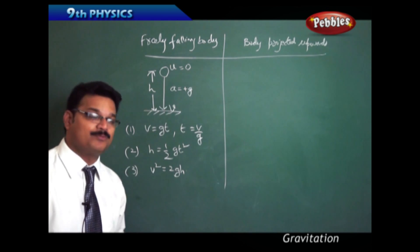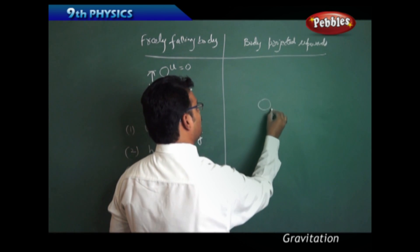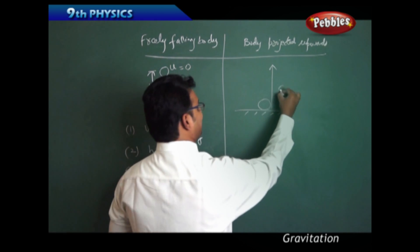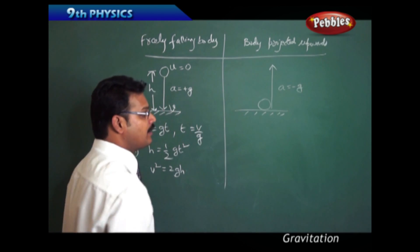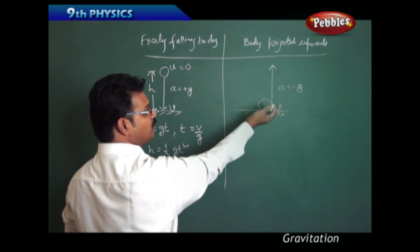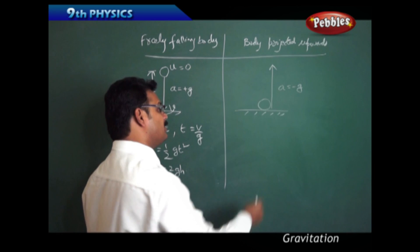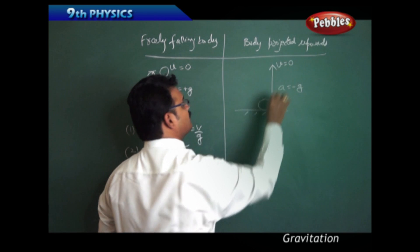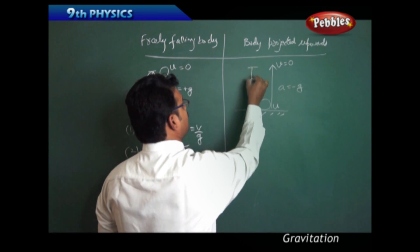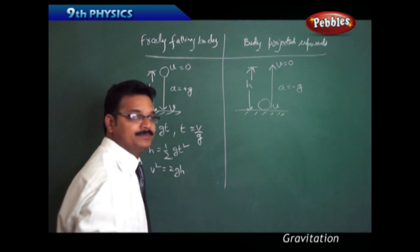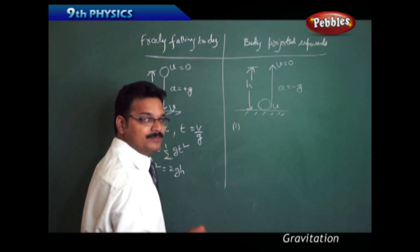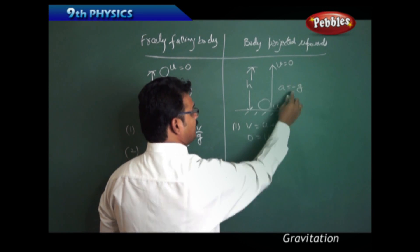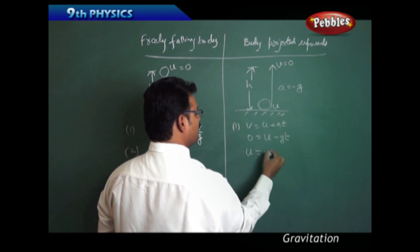Now let us see what happens for a body projected upwards. A body projected upwards moves vertically upward against gravity. Since it moves against the attractive force, acceleration A is always minus G. When you throw the body upward, it has initial velocity U, but when it reaches maximum height, its final velocity V becomes 0 and the height travelled is H. Applying V = U + AT with V = 0 and A = -G, we get U = GT.